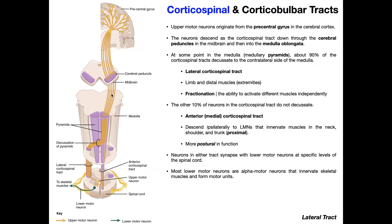When these upper motor neurons enter the pyramids, they descend downward to some extent and then a significant percentage of those nerve fibers are going to cross over to the other side of the medulla oblongata. This crossing over of these nerve fibers — or upper motor neurons — is called decussation, or we would say that these upper motor neurons decussate to the other side of the medulla. At this decussation of pyramids, about 90% of these upper motor neurons belonging to the corticospinal tracts actually decussate to the contralateral side of the medulla.